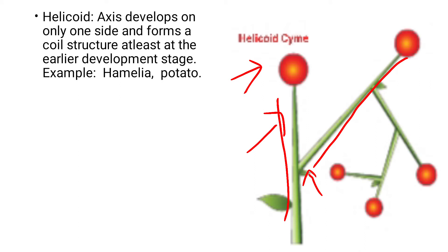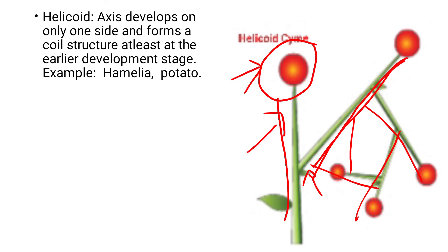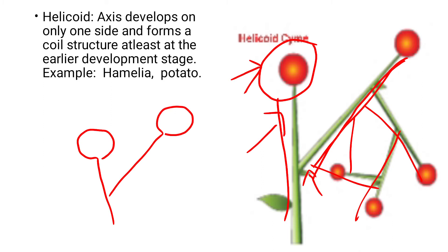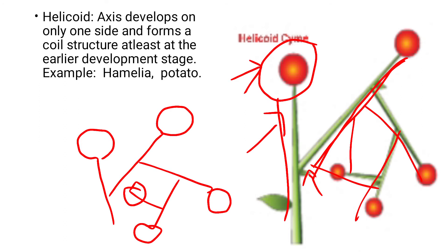In helicoid cyme, the main axis develops a floret, and the lateral branch develops on only one side. It forms a helical appearance — it looks like a helical coiling structure. Example: Hamelia and potato. This is the main axis with a flower, and the lateral branch develops here with a flower, and again the lower branch on the same side, again and again. So if you see in the picture, it looks like a helical coiling structure.